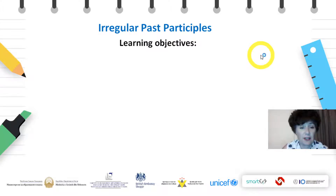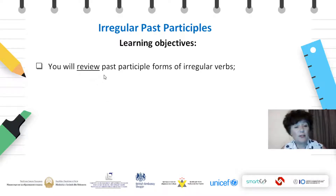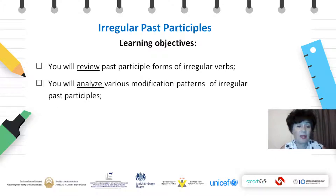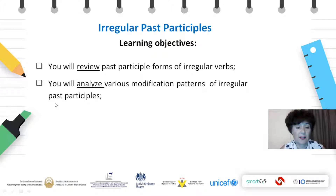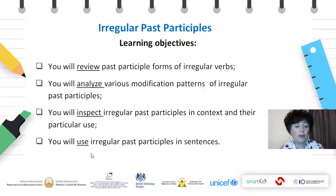First let's have a look at the objectives of our today's lesson. Objective number one: you will review past participle forms of irregular verbs, because I think you know many of them. You will analyze various modification patterns of irregular past participles. You will inspect irregular past participles in context and their particular use. And finally, you will use irregular past participles in sentences.